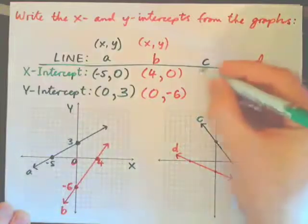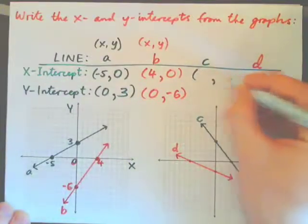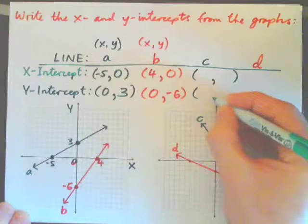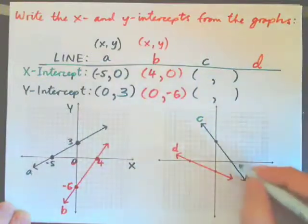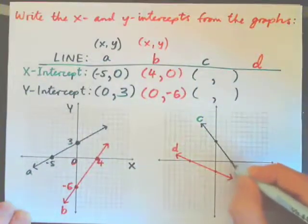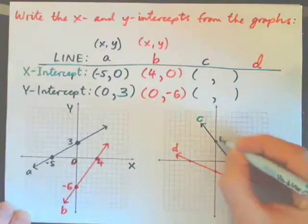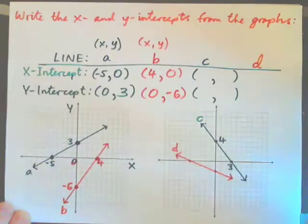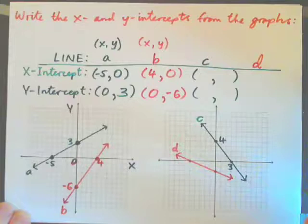Now for line C, give the x-intercept and the y-intercept. It goes through the x-axis at 3. It goes through the y-axis at positive 4. So I'll press pause in the video and do that.